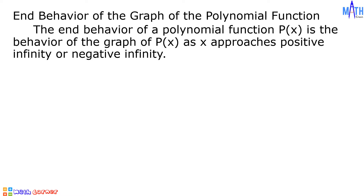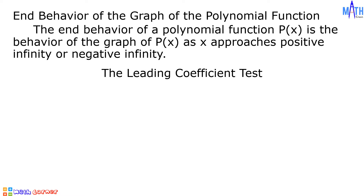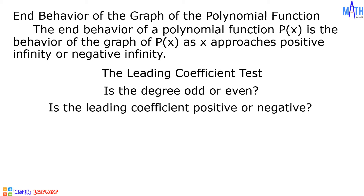Let us begin. The end behavior of a polynomial function p of x is the behavior of the graph of p of x as x approaches positive infinity or negative infinity. To determine the end behavior of the graph of a polynomial function, we will be using the leading coefficient test. We will check if the degree is odd or even, and if the leading coefficient is positive or negative.